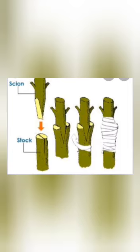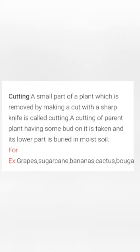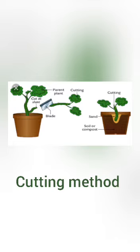Cutting. This is the most common method of vegetative propagation. In this method, a small part of a plant is cut with a sharp knife and the cut part is buried in moist soil. For example, rose cuttings, sugar cane, bananas, cactus, bougainvillea, etc. can be produced by cutting.